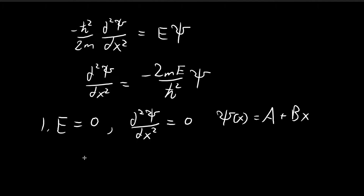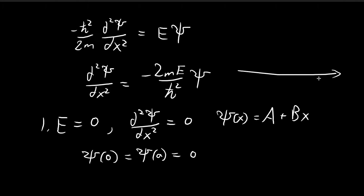We also need to satisfy the boundary conditions. We need psi of zero and psi of a to be equal to zero in order to keep psi of x continuous, because for the infinite square well, psi of x is zero everywhere outside of the well. So the two ends should be equal to zero to keep the whole function continuous.